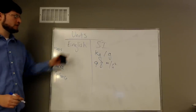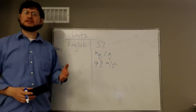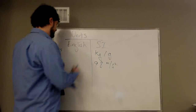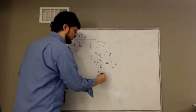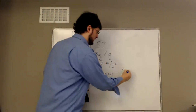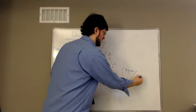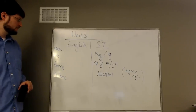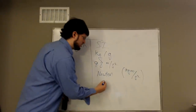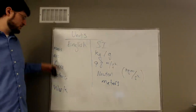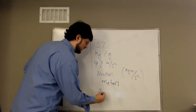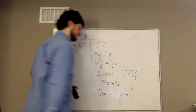Force in the SI units — remember force is mass times acceleration — is given its own name: a Newton. A Newton is kilograms meters per second squared. Distance in SI units is just meters. Work is force times distance, which would be a Newton meter, and we give that its own name: a joule. So a joule is a Newton meter, force times distance.